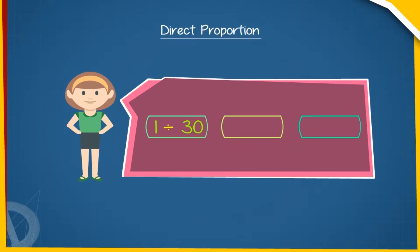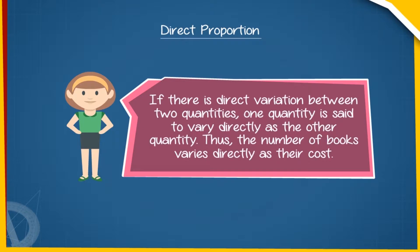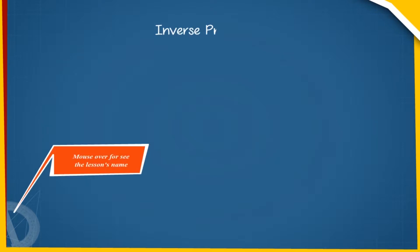In this example, 1/30 = 2/60 = 3/90, and so on. If there is direct variation between two quantities, one quantity is said to vary directly as the other quantity. Thus, the number of books varies directly as their cost.